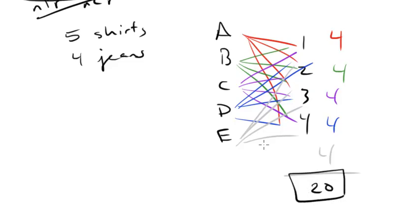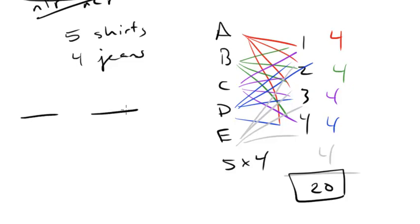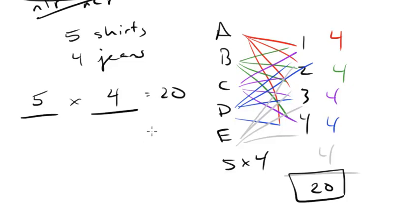Is there a shorter way to do this? Yes — you can just do five times four. This is the general counting problem strategy: whenever you're talking about arrangements, you first draw lines equal to the number of choices you have to make. In this case, two lines — one for shirts, one for jeans. In the first line put how many choices of shirts you have, which is five. In the second, how many choices of jeans, which is four. Then you just multiply everything, and there's your 20.